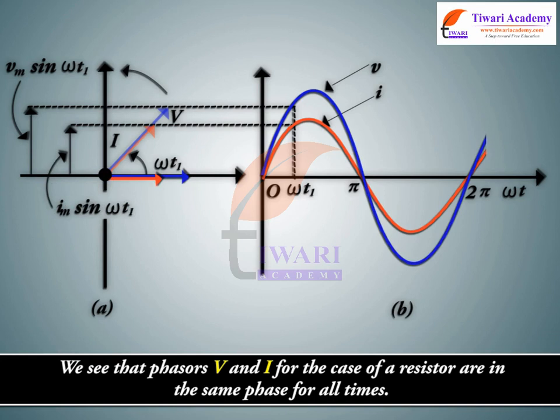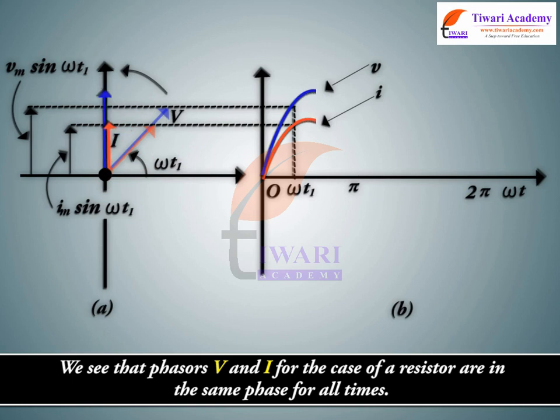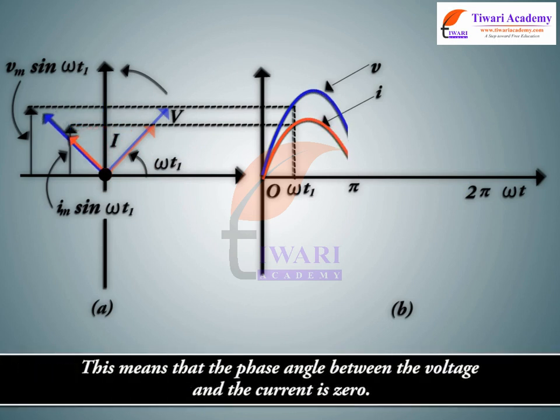We see that phasors V and I for the case of a resistor are in the same phase for all times. This means that the phase angle between the voltage and the current is zero.